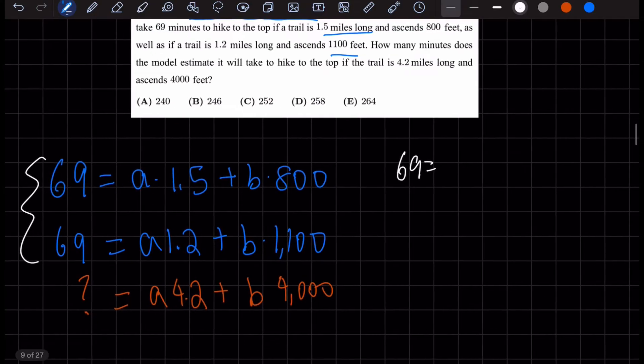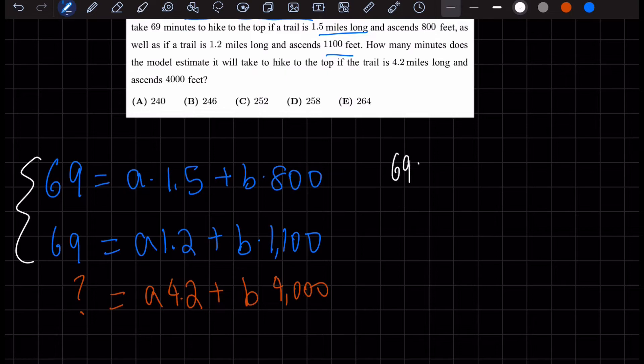69 equals, let's get rid of the decimal. So let's do 690, multiply 10 on both sides, equals 15A plus 8,000B. And we also know 690 equals 12A plus 11,000B.